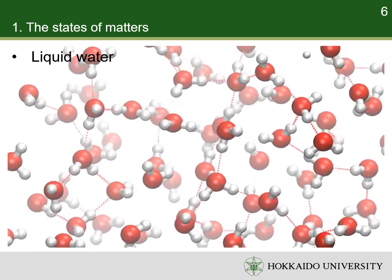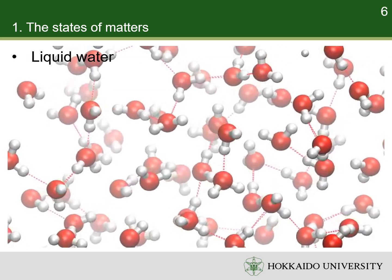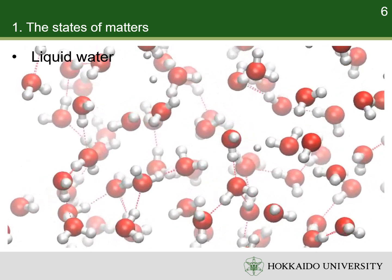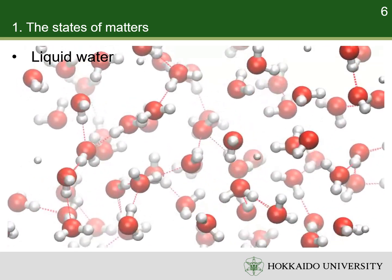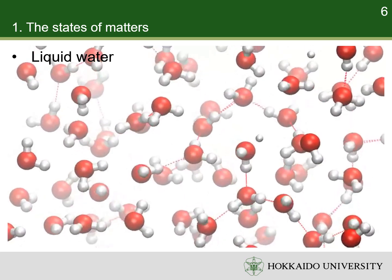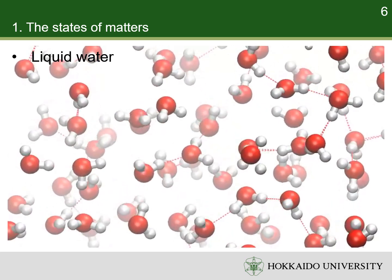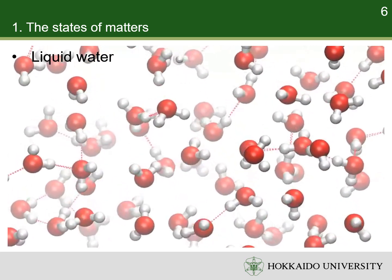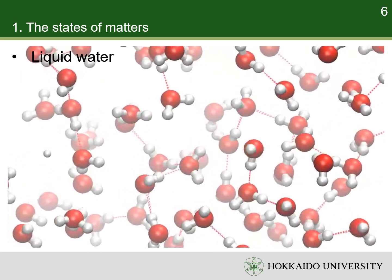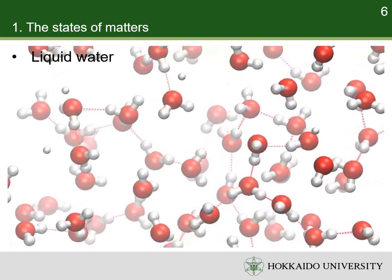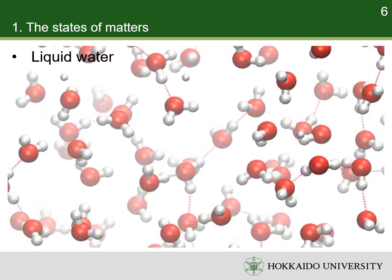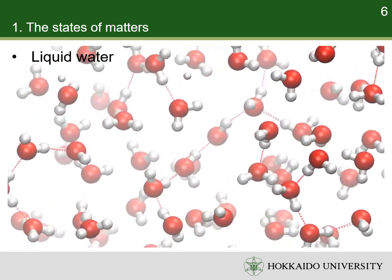For example, the density of water is close to that of ice, and much higher than that of water vapor. Hydrogen bonds are still strong, but a fraction of molecules have enough energy to break their hydrogen bonds and form hydrogen bonds with other molecules. So they can rotate and move relative to each other.